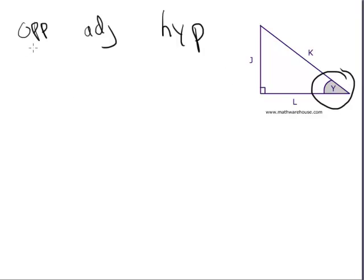What side is opposite of Y is J. You can see it's directly opposite of it. Adjacent to it is L. And K is directly across from the right angle.